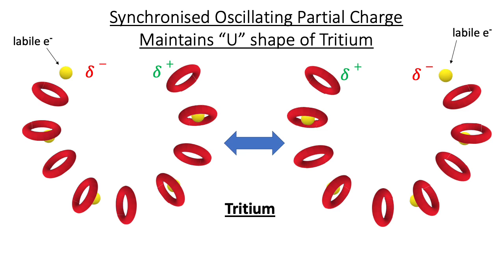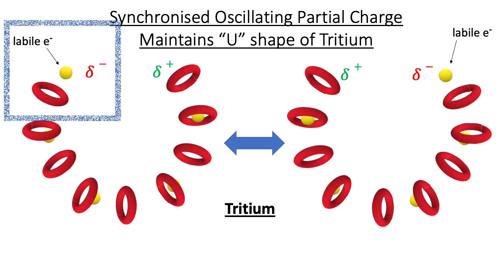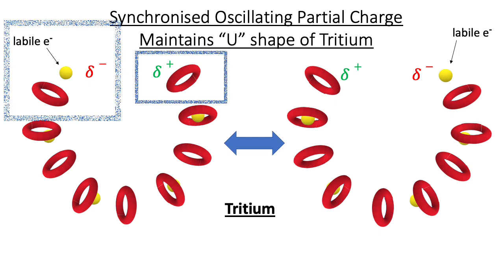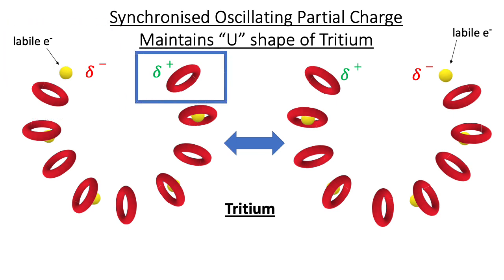The harmonic oscillation of tritium provides insight into its U-shaped structure. The labile electron is associated with a partial negative charge, while the other end of the U has a partial positive charge. These opposite charges result in attraction. With oscillation, the charge position changes, but the attraction is still there.